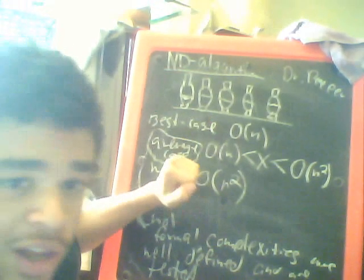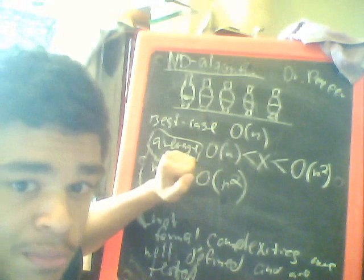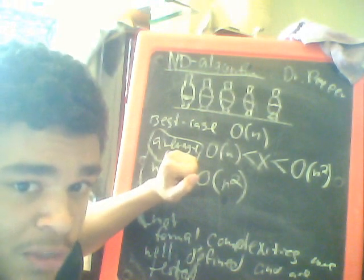All right, so that is the introduction to the best case, average case, and worst case complexity.